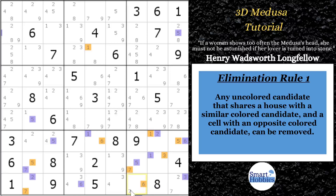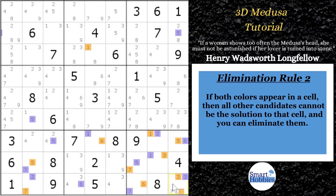Once you do the elimination, continue the Medusa. We know this can be a purple seven from the conjugate pair, and now there are only two twos in the block, so we can color that as an orange two. This leads to the second elimination rule: if both colors appear in a cell, all other candidates cannot be the solution to that cell. Since the seven is not part of either path, it can be eliminated — it would break both possible solution paths.